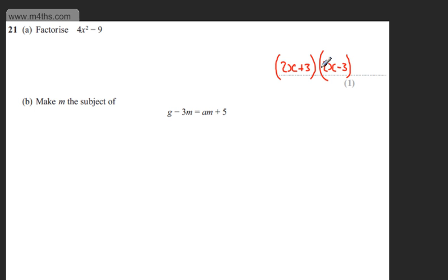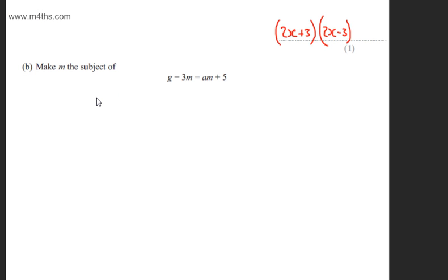You can, of course, have these factors either way round. In part B for three marks, we need to make M the subject of G minus 3M is equal to AM plus 5.